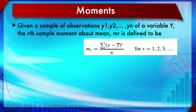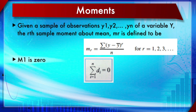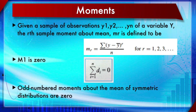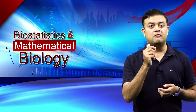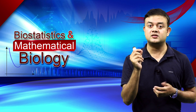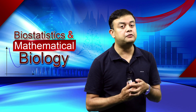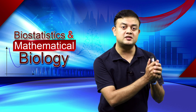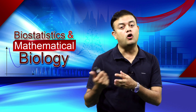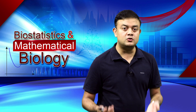Moments are always based upon the sample mean, never the median. The first moment, m1, is always zero — that is how the mean is defined. Odd-numbered moments about the mean of a symmetric distribution will also be zero — that is, to the power one, three, five, seven, and so on. To check if a distribution is symmetrical, you raise to the power of an odd number and see if it sums to zero.